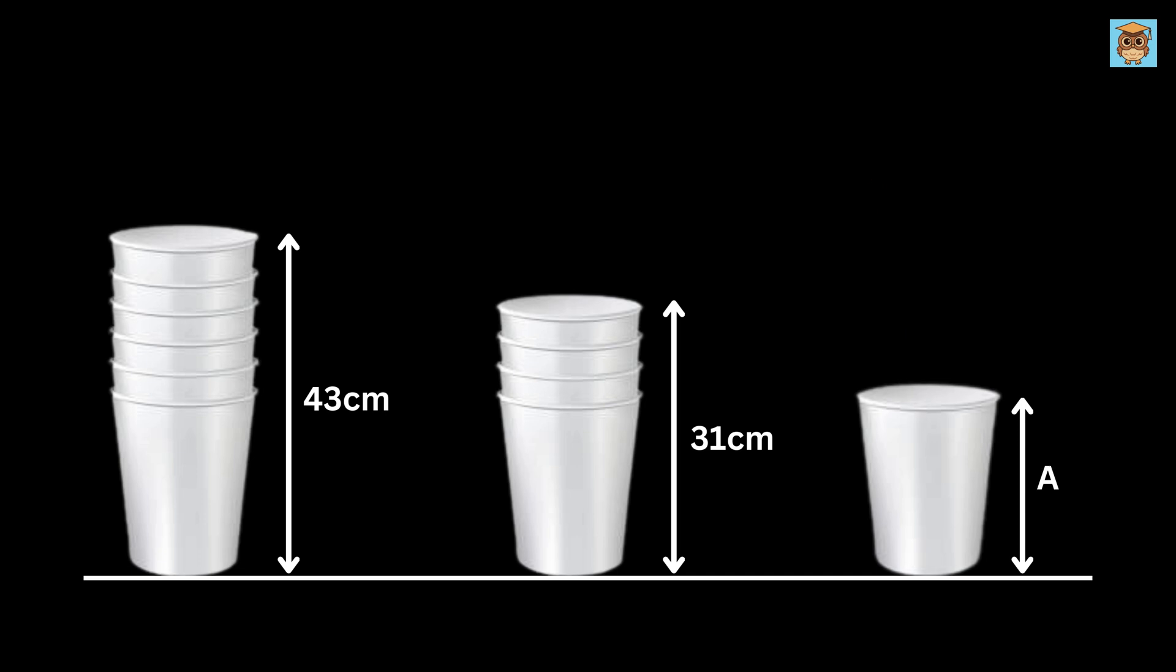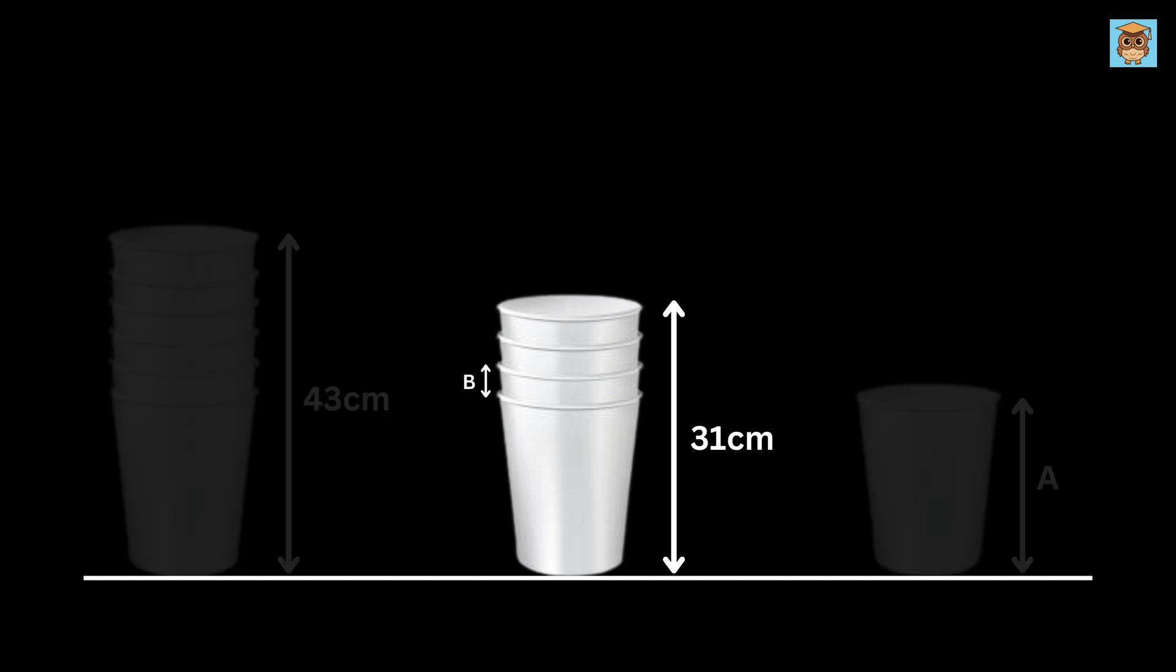And let us label this part of the glass which is visible when the glasses are stacked as B. Now look at this part. This is A and this is B. This is also B and this is also B.